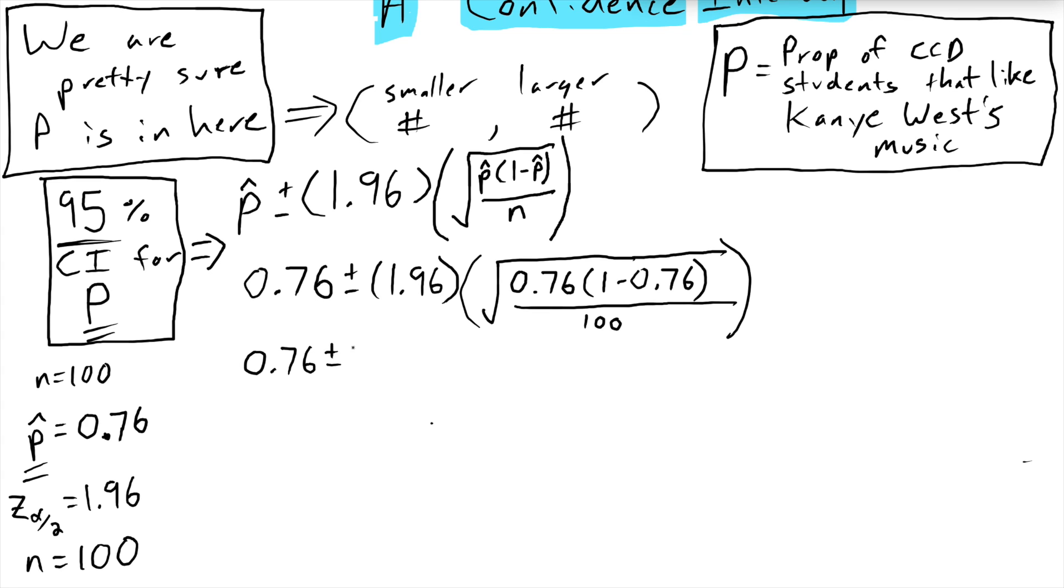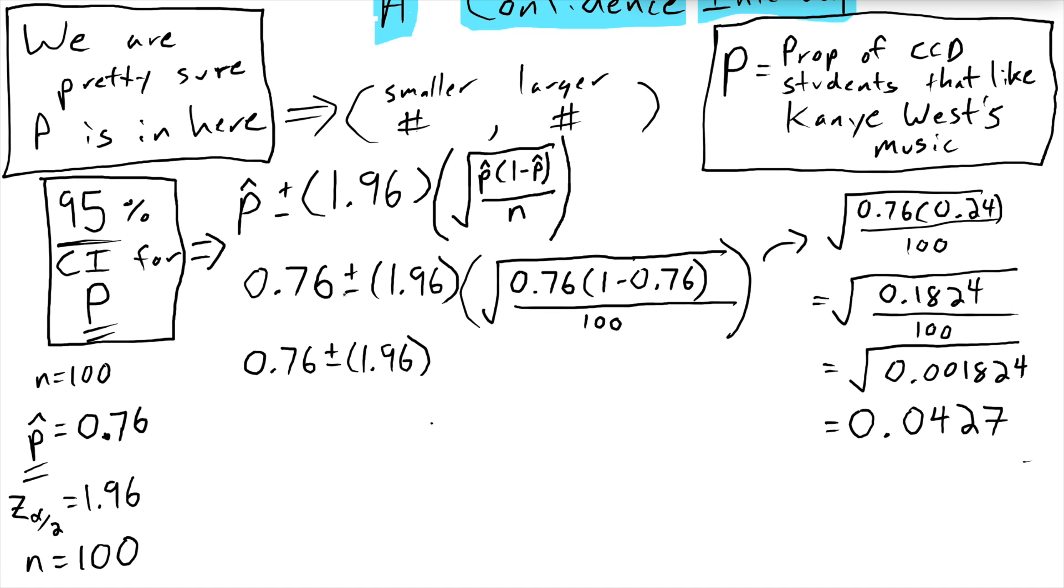So the next thing I always do is I find the standard error. I've got the square root of 0.76 times 1 minus 0.76, which is 0.24. All that is divided by 100. Now I need to take the square root of 0.001824. And I can actually take that to the one half power if I'm being clever. But regardless, I should get with a little bit of rounding 0.0427.